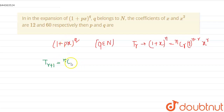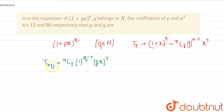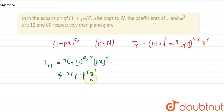Applying the formula, T_{r+1} = nCr · p^r · x^r. This gives us the general term. Now it is given that the coefficients of x and x² are 12 and 16 respectively.